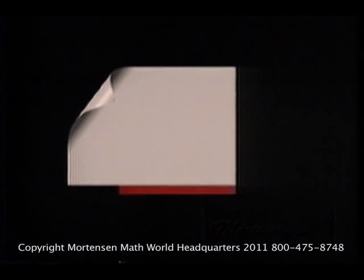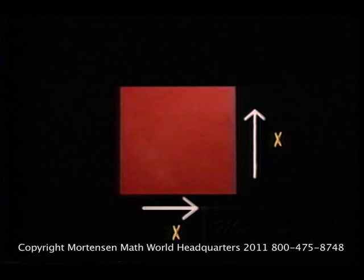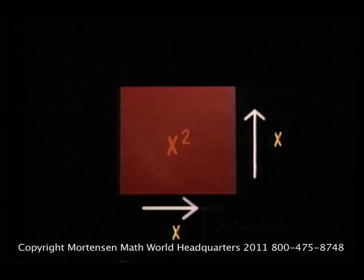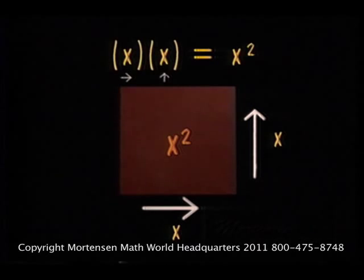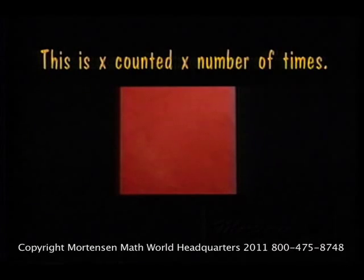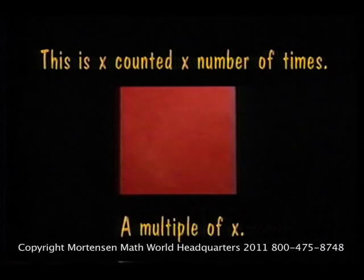How far up would we move the slider? Right, we would move the slider up X. So, X over, counted X up times gives us what? An X square. X over, X up, equals X square. This is X counted X number of times, a multiple of X.